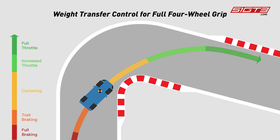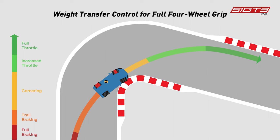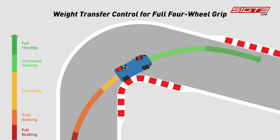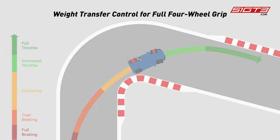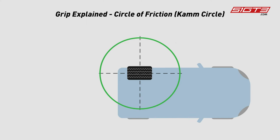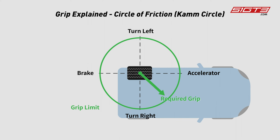When the car starts cornering, the weight of the car is transferred from the front to the rear and the outside. At this point, the outer tire bears more weight, which pushes the grip limit of the outer tire. Here, we use the circle of friction to explain the problem. What we need to understand is that the grip of the tire is limited, and we use the green circle to indicate the grip limit of the tire. Within the grip limit, the tire is controllable. If the grip limit is exceeded, the tire will lose control and the grip will be reduced.